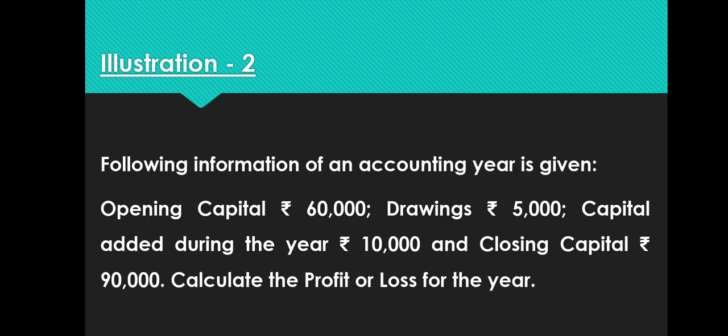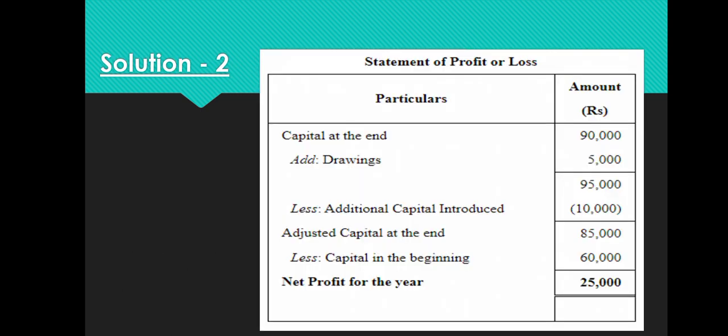Another example: Opening capital Rs. 60,000; drawings Rs. 5,000; capital added Rs. 10,000; closing capital Rs. 90,000. Statement of Profit and Loss: Closing capital 90,000 + drawings 5,000 = 95,000 − additional capital 10,000 = adjusted capital 85,000 − opening capital 60,000 = profit Rs. 25,000.